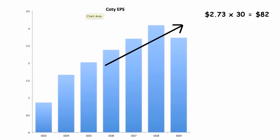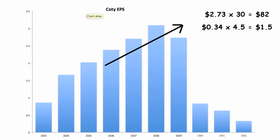In the event, earnings plunged over the next three years, and the multiplier contracted sharply. By 1932, earnings had fallen nearly 90%, and the multiplier applied was only four and a half times at the low point. The stock had dropped from a high of $82 in 1929 to a low of $1.50 in 1932.